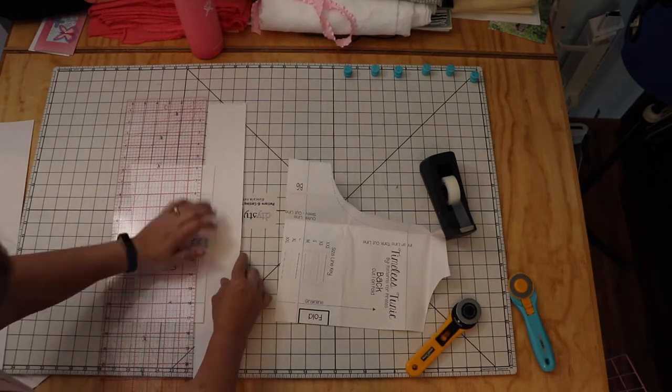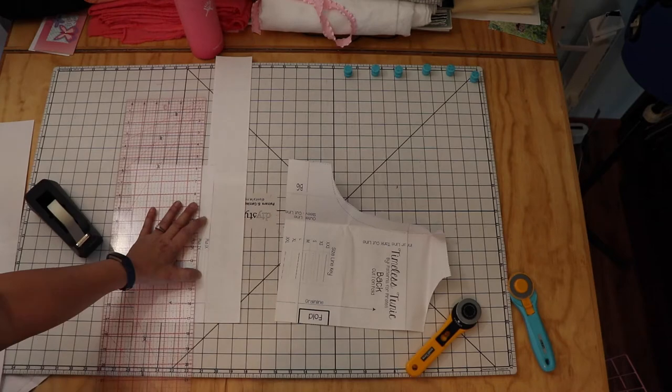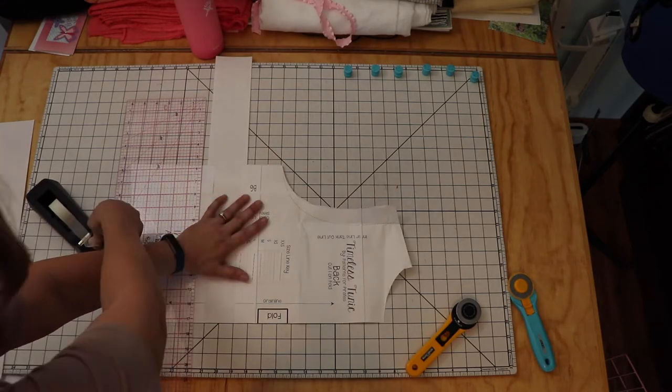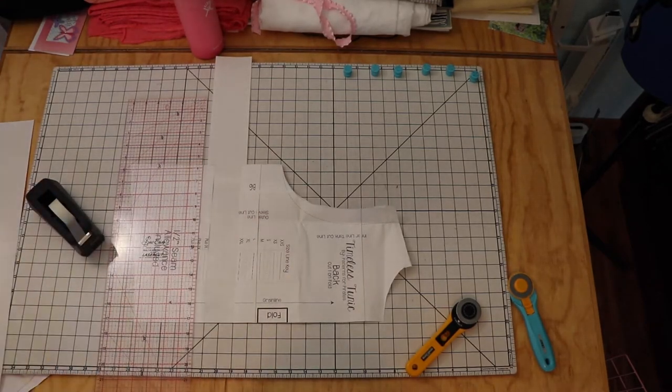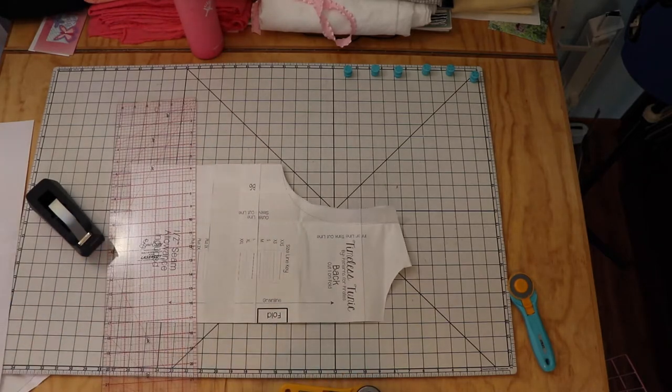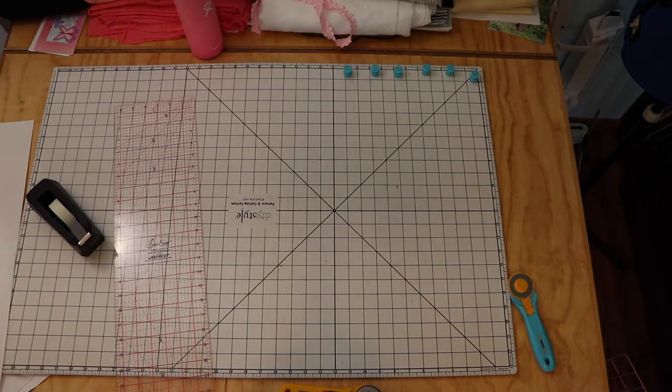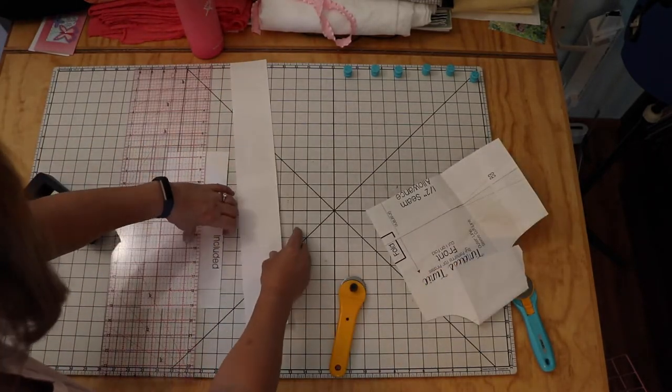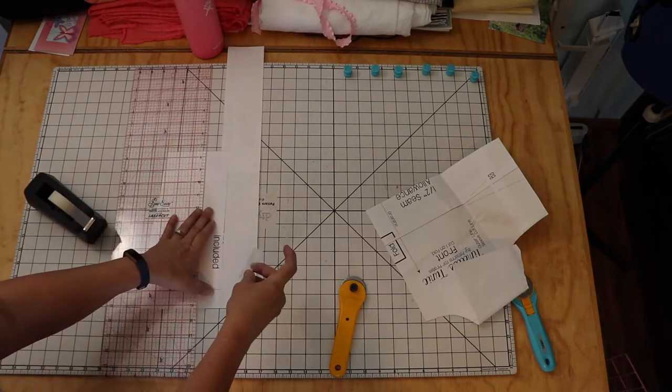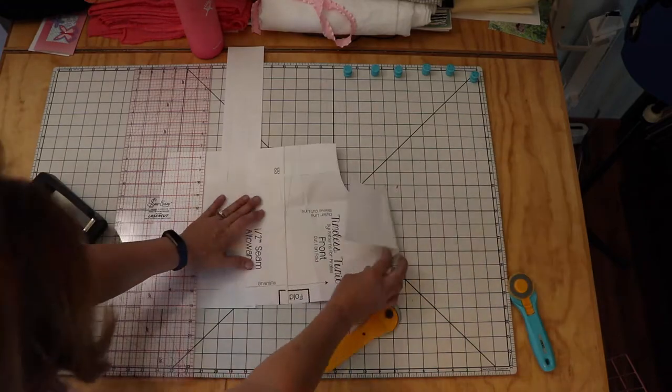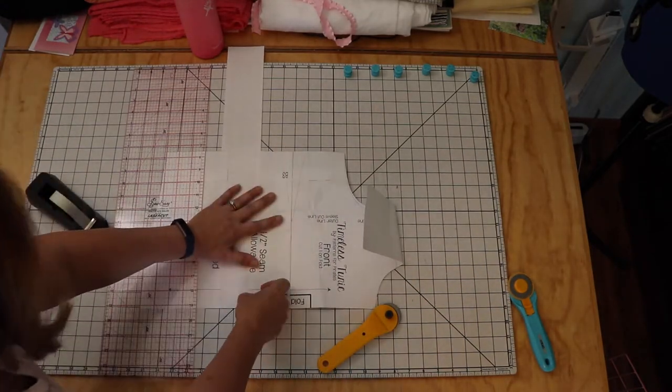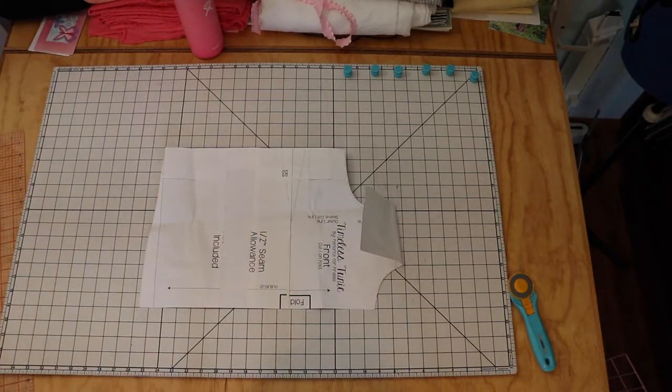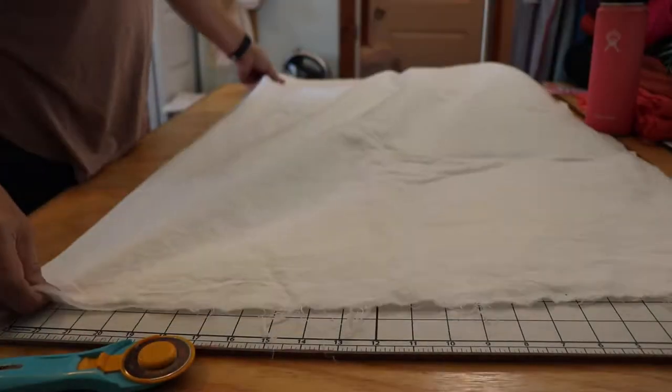So here I am adding the trunk length to the pattern like I talked about. What I do is line up the edge of the pattern that gets cut on the fold with a line on my cutting mat, and then I make a cut perpendicular to that line on the pattern. I spread it apart, add in another piece of paper, and then tape it back together. Here I am repeating the process for the front piece.